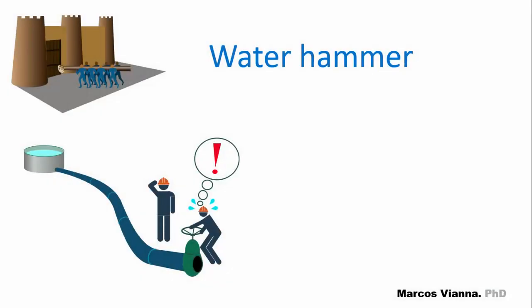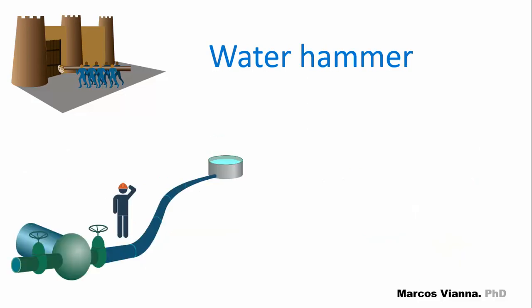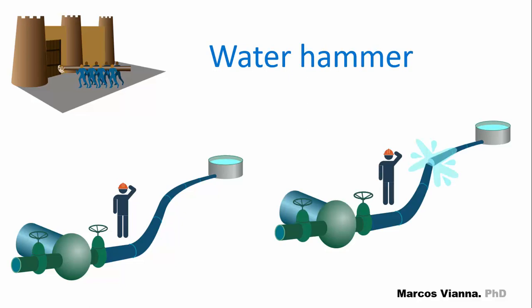In our previous video, we began studying the water hammer, which occurs in closed pipes during transient conditions. As we saw, it can happen during the closure of a valve when the closure time is too small, and in pumped lines when a power failure happens.